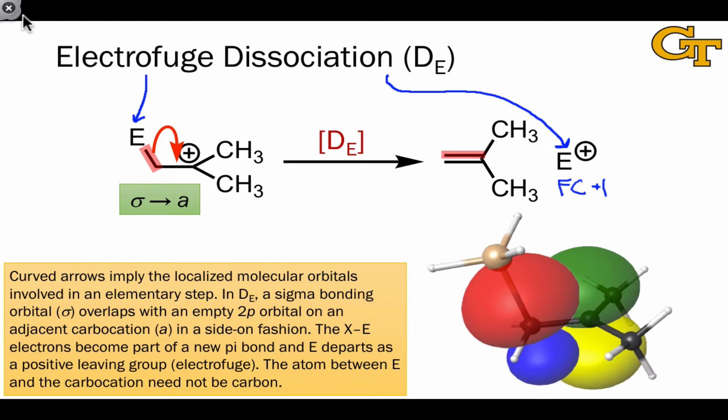Here's an image of the orbital overlap. In this particular example, the electrophuge is a silicon atom, and the sigma orbital that serves as the source is shown here. In green and yellow, we see the empty atomic orbital of the cationic atom two carbons away from the silicon atom.